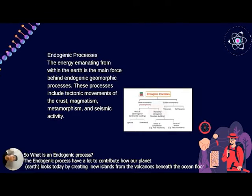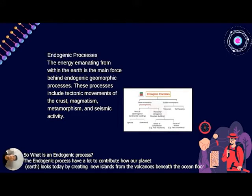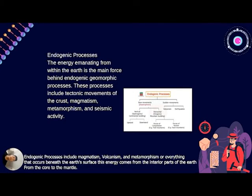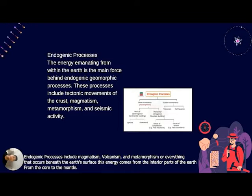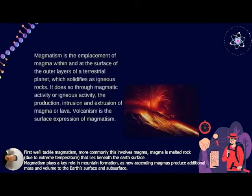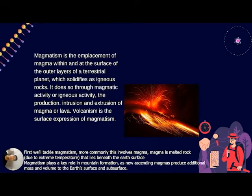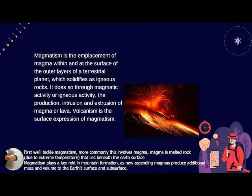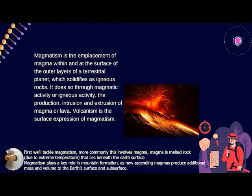So what is an endogenic process? Endogenic processes have contributed to our planet as we see it today by creating new islands from magma beneath the ocean. Endogenic processes include magmatism, volcanism, and metamorphism — everything that occurs beneath the Earth's surface, from the core to the mantle. First, we will talk about magmatism. This involves magma — molten rock due to extreme temperatures beneath the Earth's surface. Magmatism adds new material to the Earth's surface and subsurface.